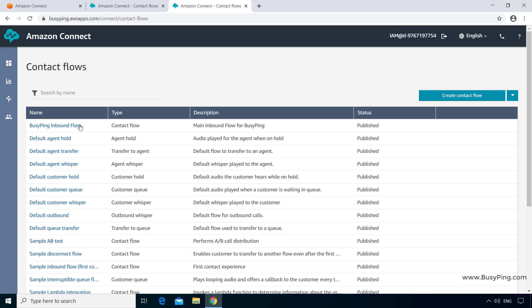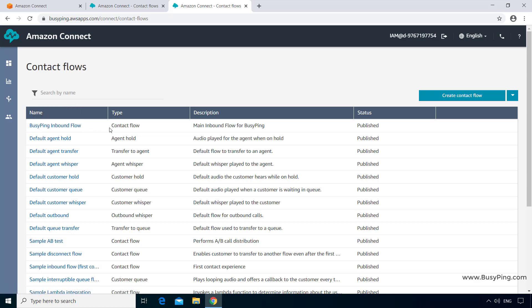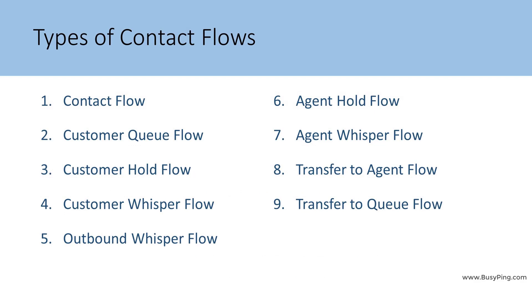In the last video, we created a basic contact flow called BusyPing Inbound Flow, which you can see here. You can also see the type for BusyPing Inbound Flow is Contact Flow. There are nine types of contact flows in Amazon Connect, and they are all listed here. Now, I understand it is very confusing that contact flow itself is a type of contact flow.